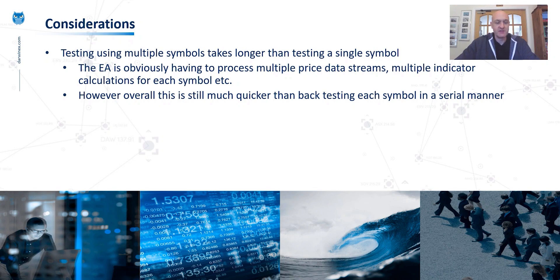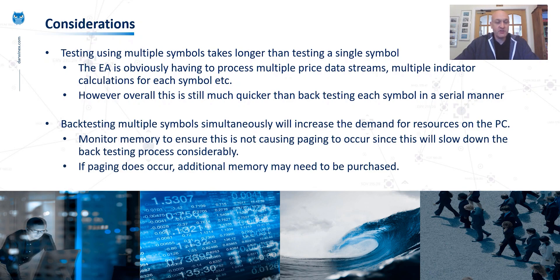Just a couple of considerations for multi-symbol EAs. The first is that when you are backtesting an EA with multiple symbols, it will obviously take a lot longer to test than the same EA for a single symbol. However, this is still much quicker than if you backtested each symbol in a serial manner. Additionally, because there are multiple price data streams and multiple indicator values for each symbol that need to be processed by the backtester, this means there's an increased demand on resources, and in particular memory, because if your standard memory runs out, this will cause paging on the PC and will slow down the backtesting process considerably.